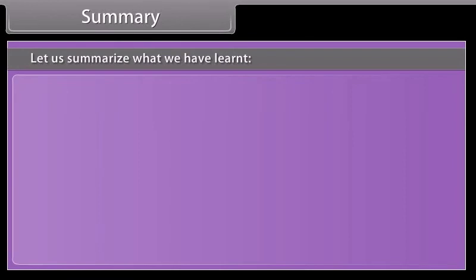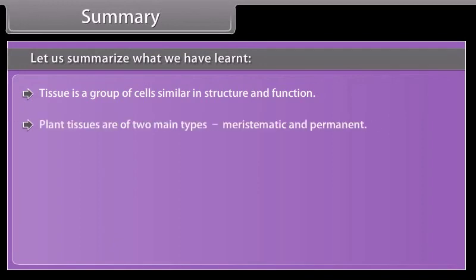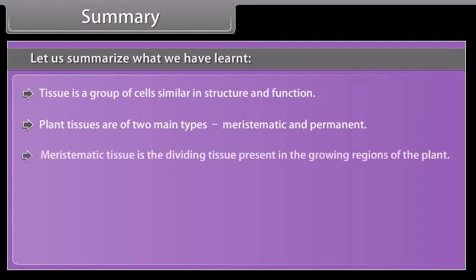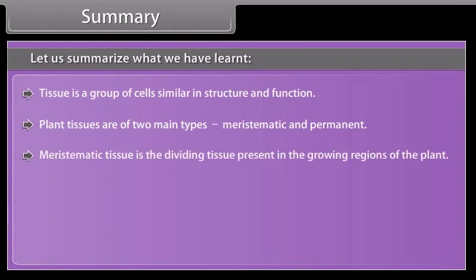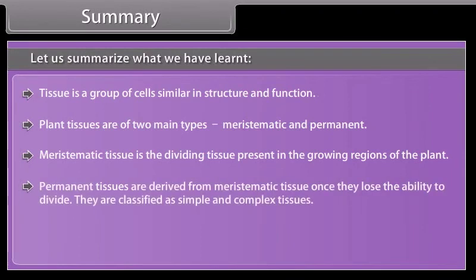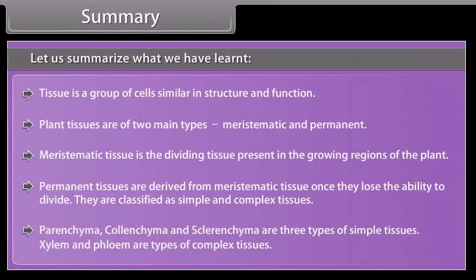Let us summarize what we have learned. Tissue is a group of cells similar in structure and function. Plant tissues are of two main types: meristematic and permanent. Meristematic tissue is the dividing tissue present in the growing regions of the plant. Permanent tissues are derived from meristematic tissue once they lose the ability to divide. They are classified as simple and complex tissues. Parenchyma, colenchyma and sclerenchyma are three types of simple tissues. Xylem and phloem are types of complex tissues.